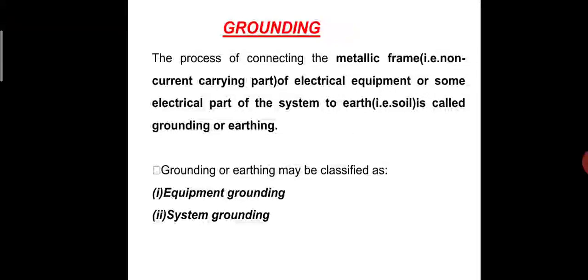Next: Grounding. Necessity of neutral grounding. All the power systems of today operate with grounded neutrals. Neutral grounding offers several advantages. The neutral point of generator, transformer, rotating machines, etc., is connected to earth either directly or through an impedance. The neutral earthing is one of the most important features of the system design.